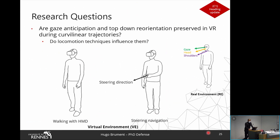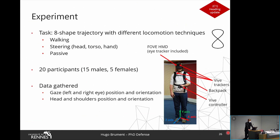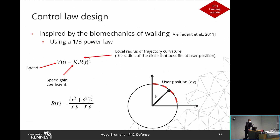To answer this question, we conducted a study where participants had to perform an eight-shaped trajectory with different locomotion techniques. We tested five techniques: real walking, three steering techniques using either the head, torso, or hand to define direction, and a passive technique where virtual motion was automatically updated. We had 20 participants and gathered motion data such as gaze, head, and shoulder position and orientation in both virtual and real environments. For the steering techniques, we designed a control law adapted to the task based on the biomechanics of walking using the one-third power law, which has been proven in real environments to relate speed to the local radius of curvature of the trajectory.